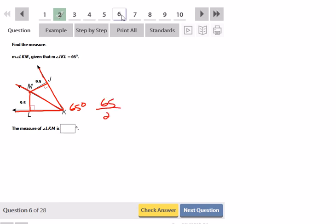So 65 divided by 2 is going to be a decimal, but since this is a measurement, we'll go ahead and keep that decimal. That's going to be 32.5. LKM, which is what we're looking for here, is half of the 65, so that's going to be 32.5 degrees.